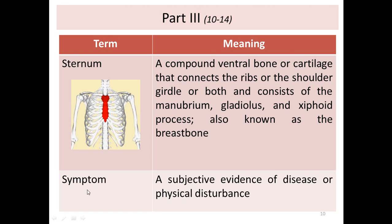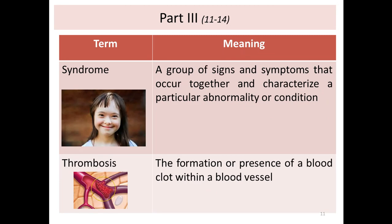A symptom is subjective evidence of disease or physical disturbance — something felt by the patient. A sign, by contrast, is something you can see on the patient, like pallor in anemia, yellowish discoloration in jaundice, or bluish discoloration in cyanosis. A symptom such as headache, abdominal pain, or chest pain can only be felt by the patient, not detected externally.